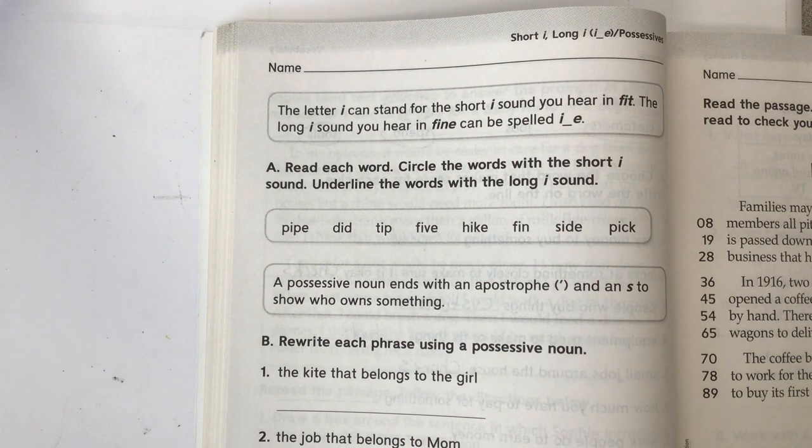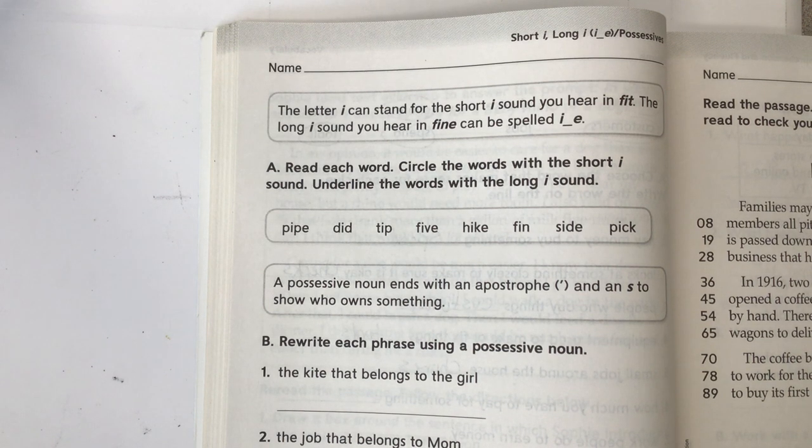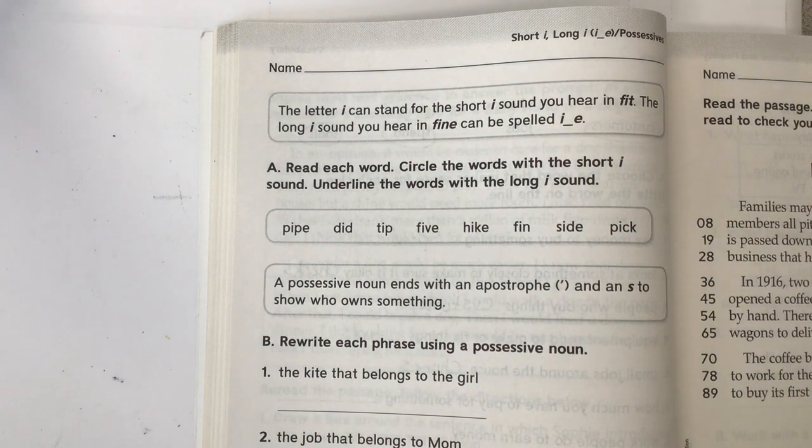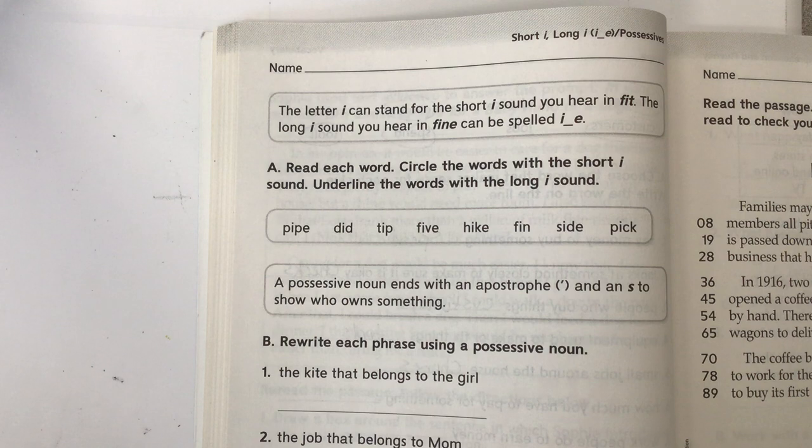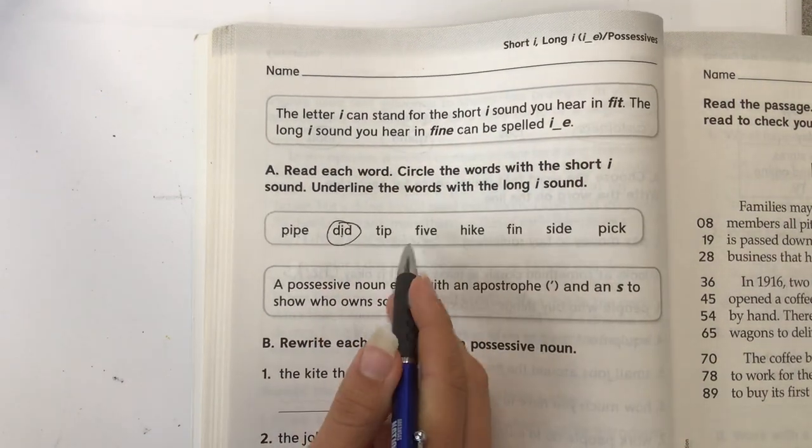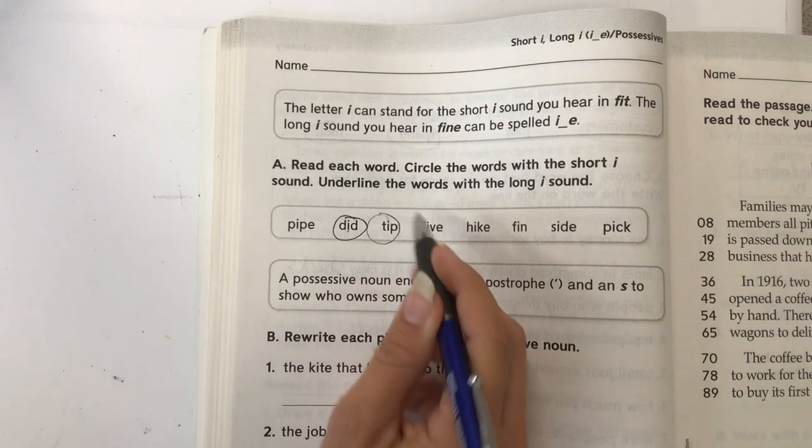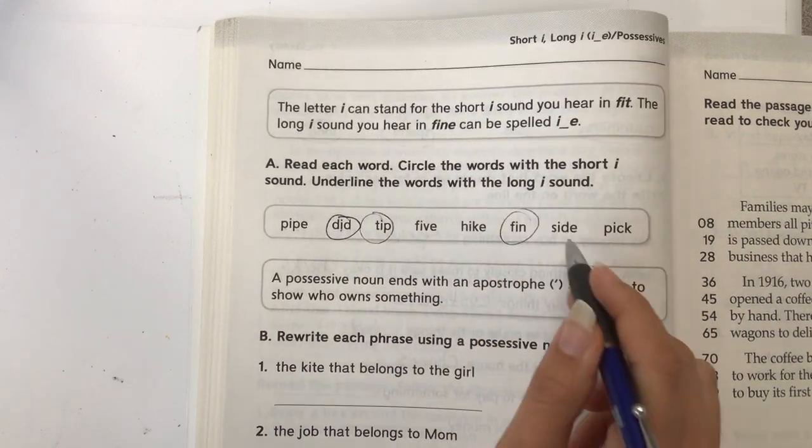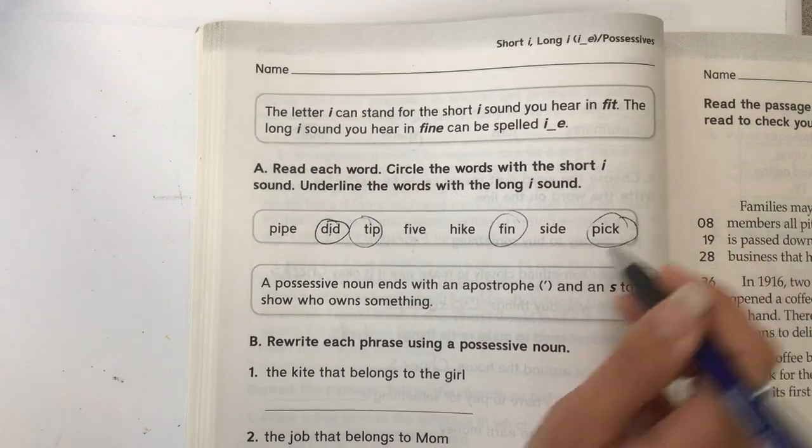Read each word. Circle the words with the short I sound. Underline the words with the long I sound. So let's go through and find first the short I: pipe, did, tip, five, hike, fin, in, side, pick. Those are the short I's.